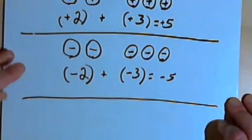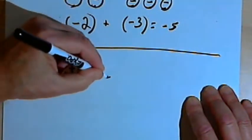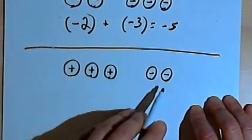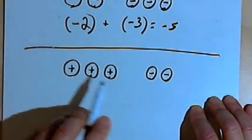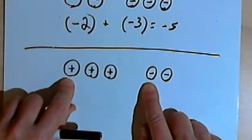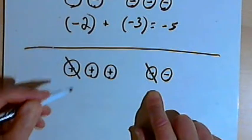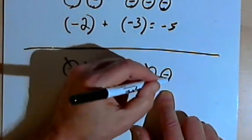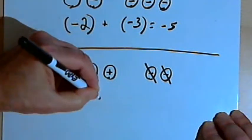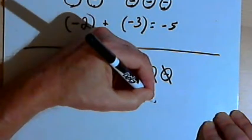Now let's see what happens when you've got both positive and negative numbers. You play the game, and in the first round you get 3 positive chips; in the second round you get 2 negative chips. We can't just add up the total number of chips because there are different kinds — positive and negative. But if you think about it, one positive chip and one negative chip cancel each other out. So I can take pairs of positive and negative and cancel them out. After crossing out two pairs, I just have one positive chip left. So positive 3 plus negative 2 equals positive 1.